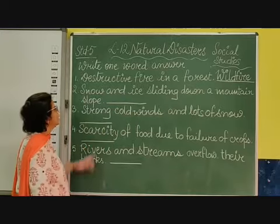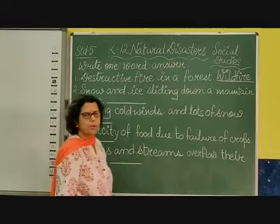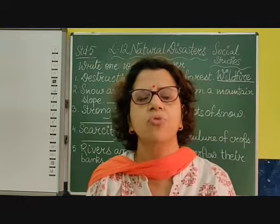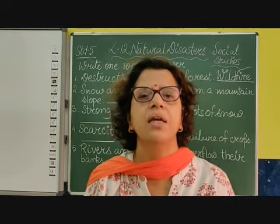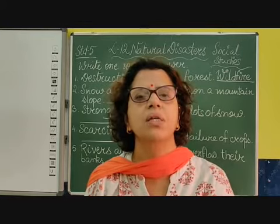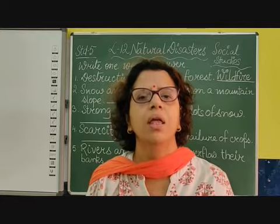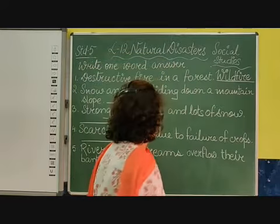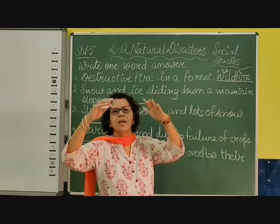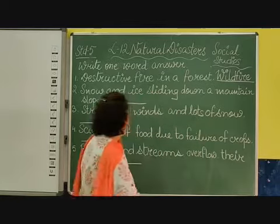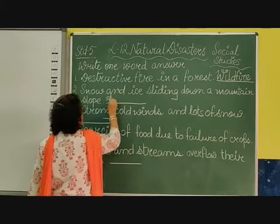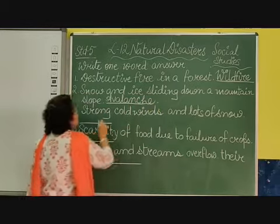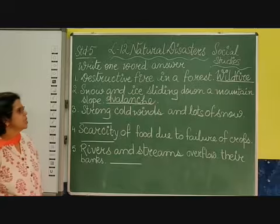Coming to the second one: snow and ice sliding down a mountain slope. When snow and ice come down the mountain, that is called avalanche. We discussed that recently — just two years back, when there was an earthquake in the Himalayan range of Nepal, there was an avalanche and many Indian soldiers lost their lives. So avalanche is when snow, ice, and rocks slide down the mountain. A-V-A-L-A-N-C-H-E. Avalanche.